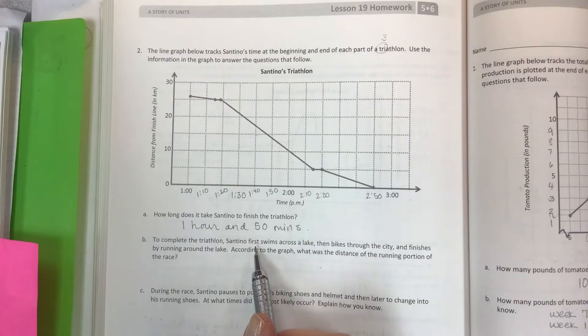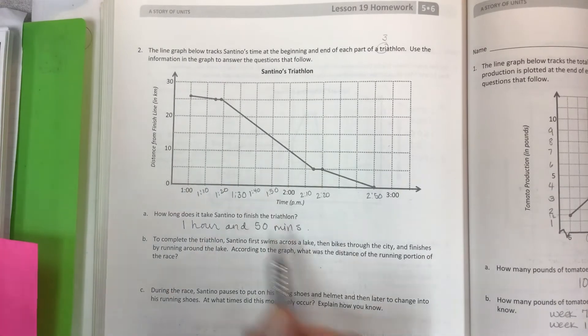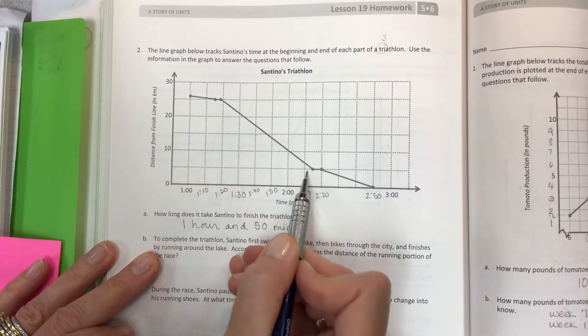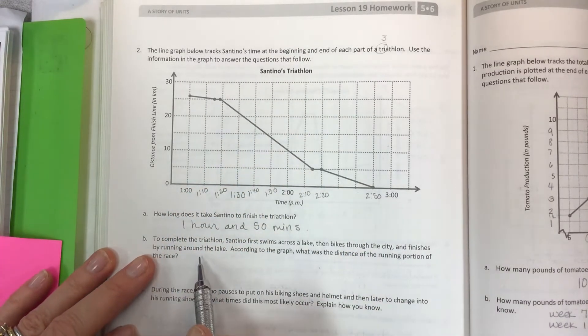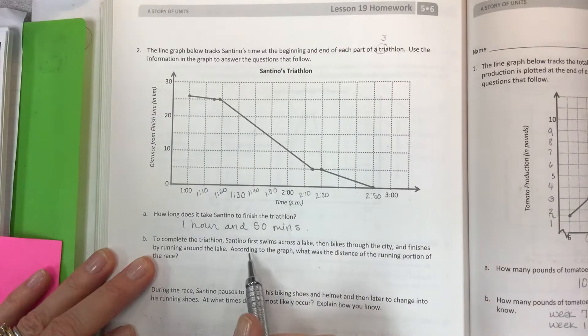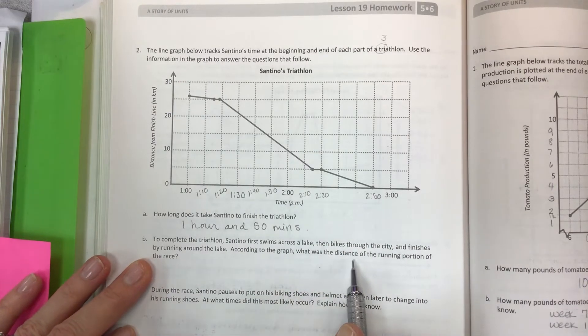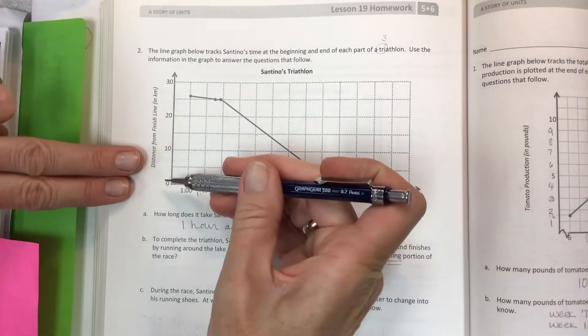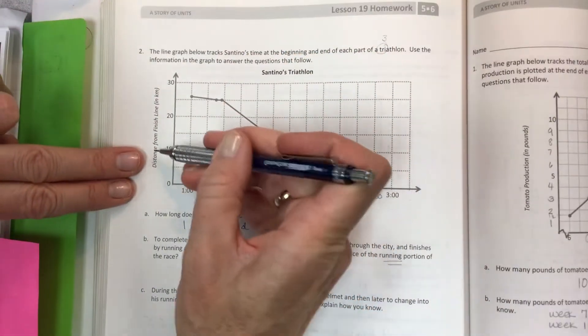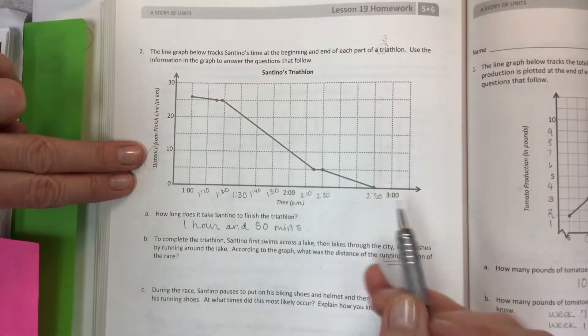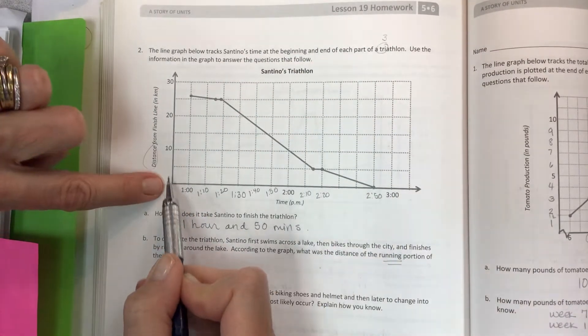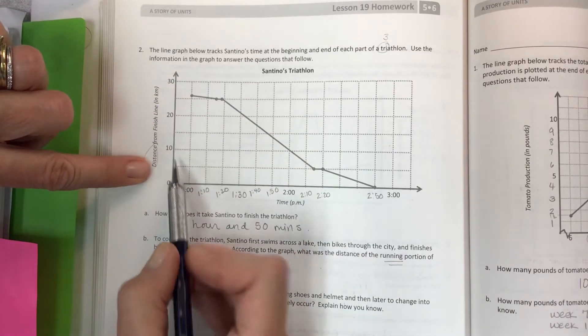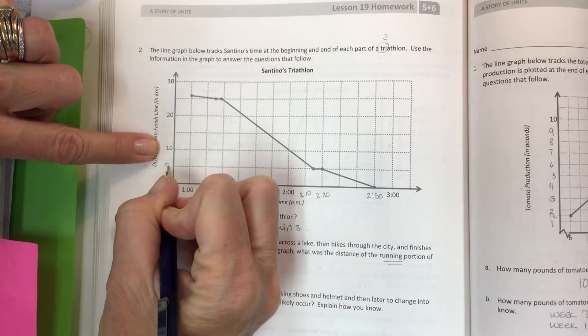To complete the triathlon, Santino first swims across the lake, then bikes through the city, and finishes by running around the lake. According to the graph, what was the distance of the running portion of the race? According to the graph, distance is on the side. Distance is over here. So what are we counting by on this number line? This is time. This is not time. This is kilometers. Hopefully you know half of 10 is 5. Halfway. Halfway.